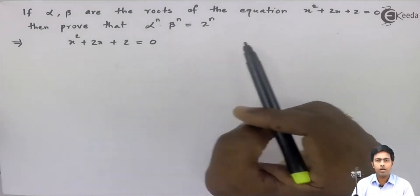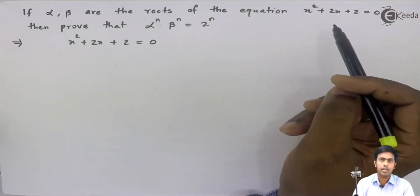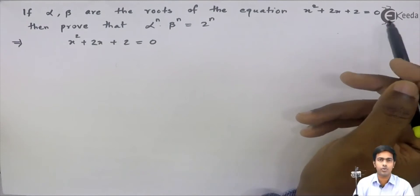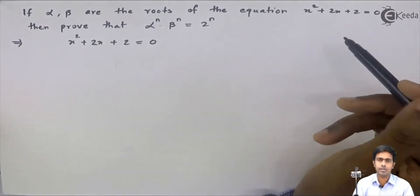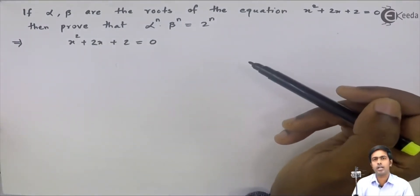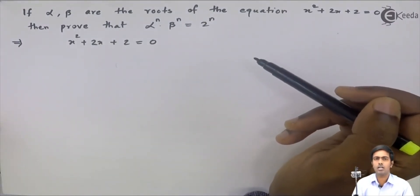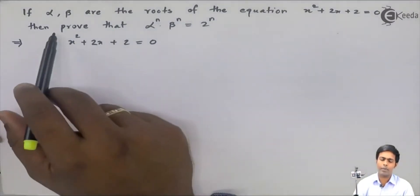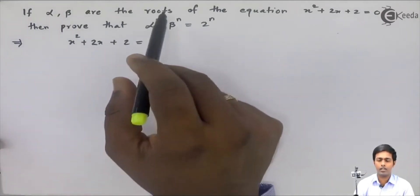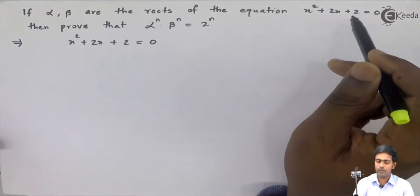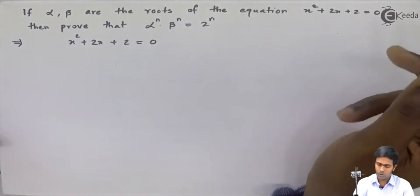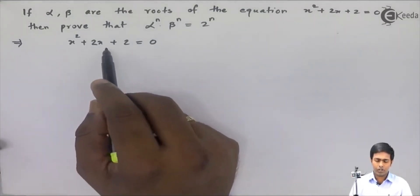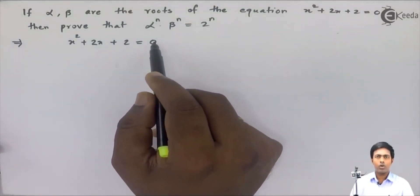Here you can see that x² + 2x + 2 = 0 is a quadratic equation. When you find the roots, you get two roots — alpha and beta are the roots of this quadratic equation. So we will start: x² + 2x + 2 = 0.